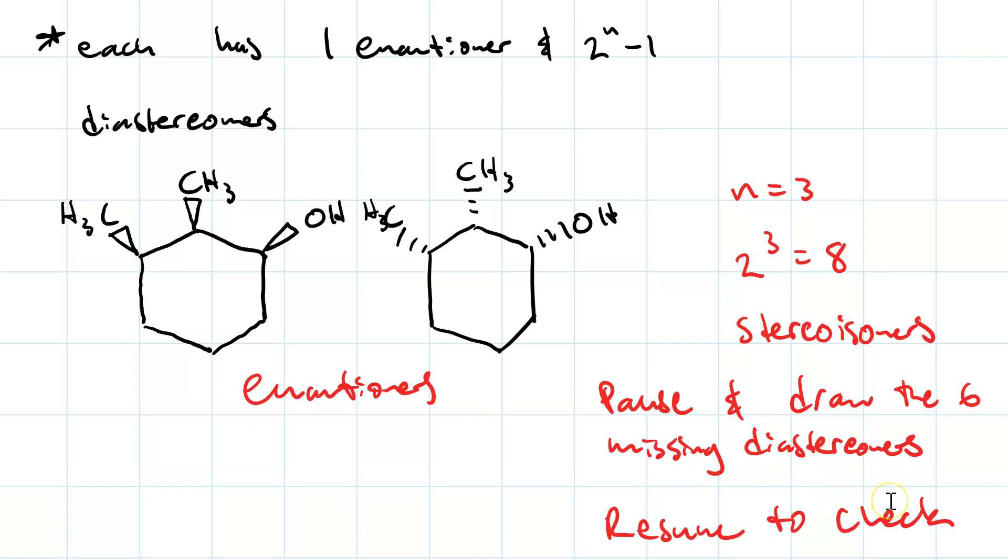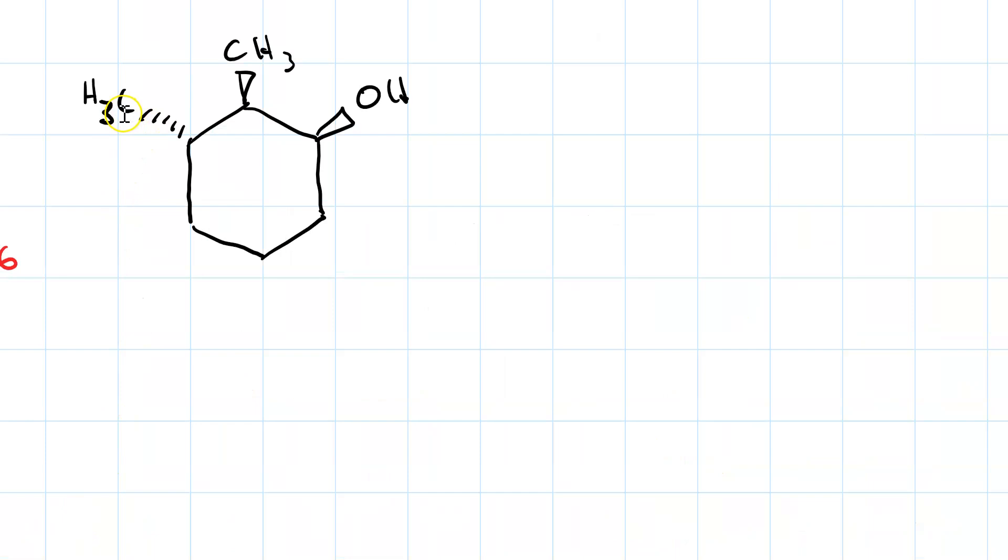When you've got your six diastereomers drawn, then resume to check. Also classify them as being enantiomers of each other. So I'm starting out with the leftmost chirality center and switching it from a wedge to a dash. Now the enantiomer of this will be wedge dash dash. So there's one pair of enantiomers. Both of those are diastereomers of the initial two.